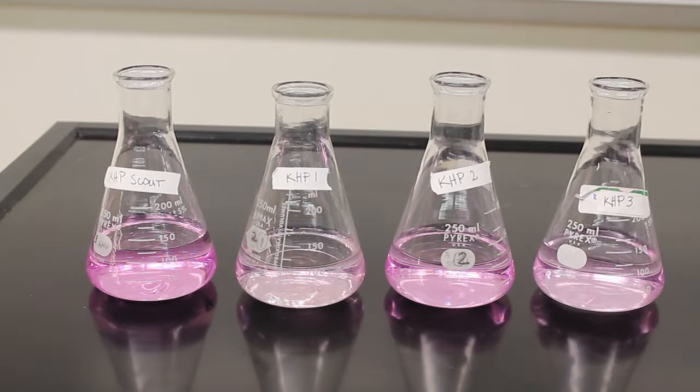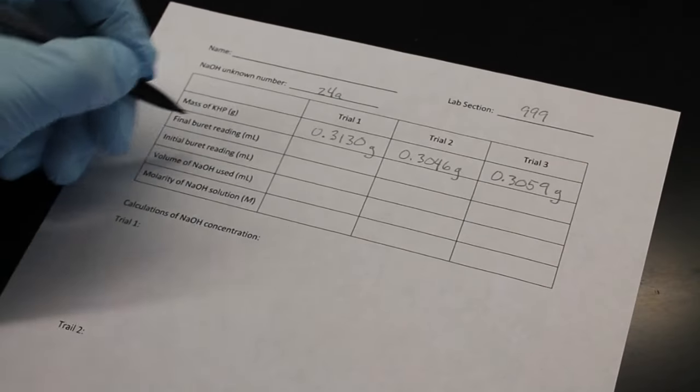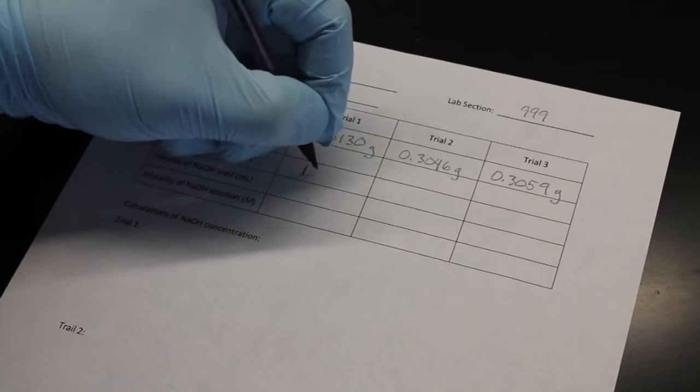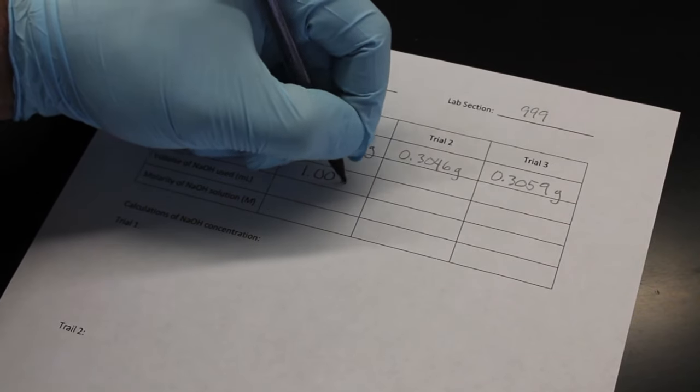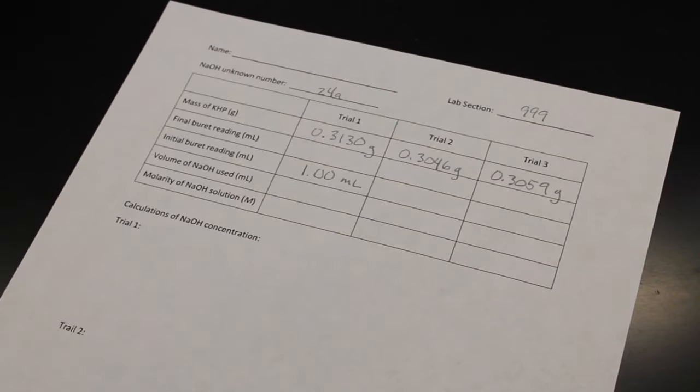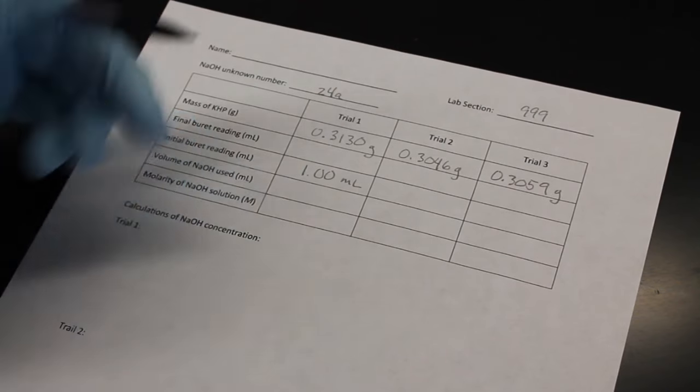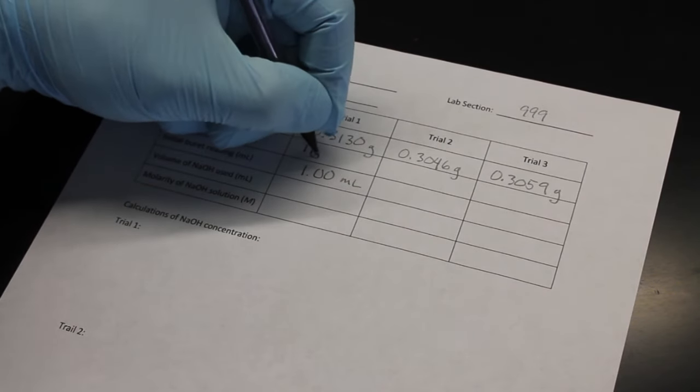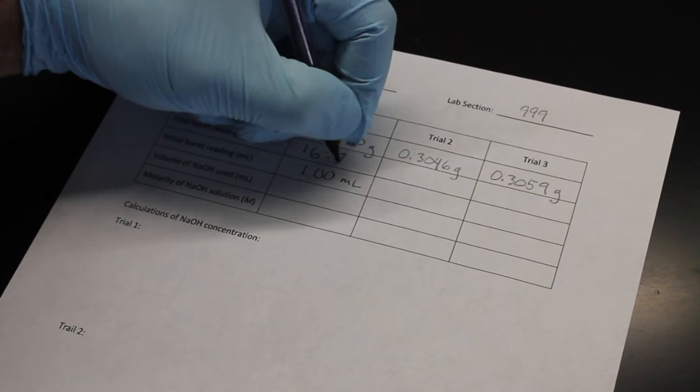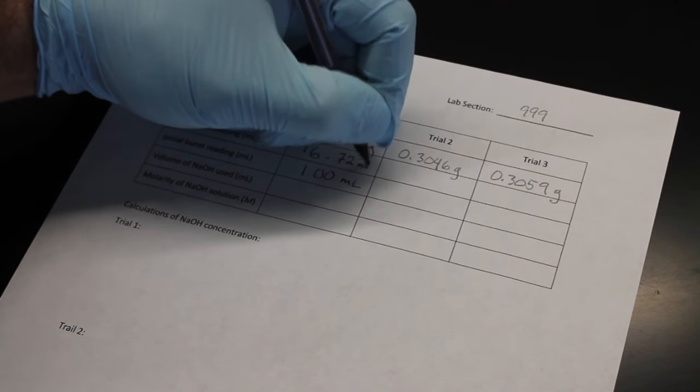Don't forget to document your initial time. The burette I was using had marks for every tenth of a milliliter. We can tell if our volume falls between these marks so we need to document our volumes to the nearest hundredth position. This is the proper number of significant figures for this piece of glassware.